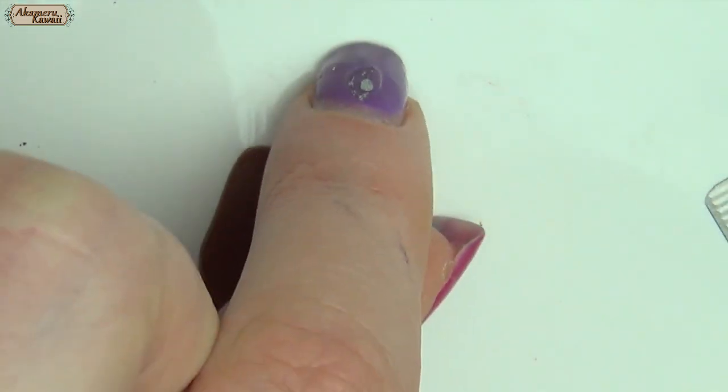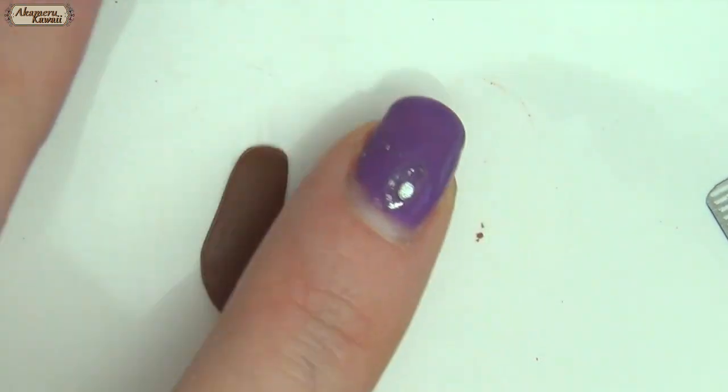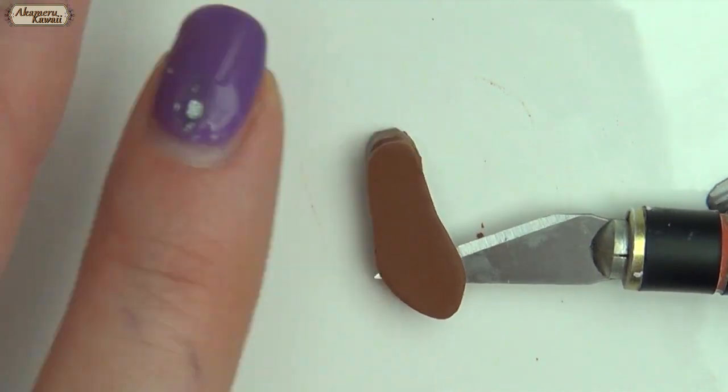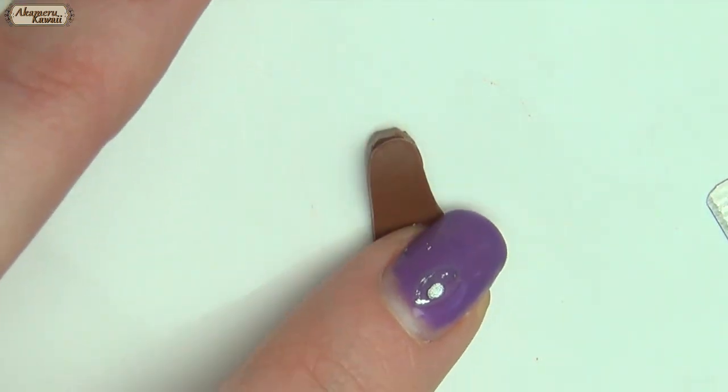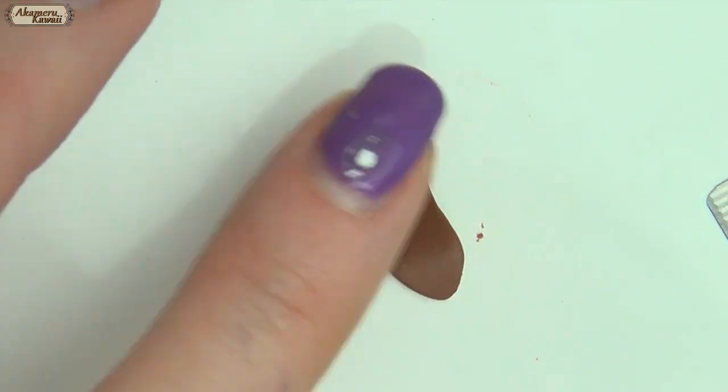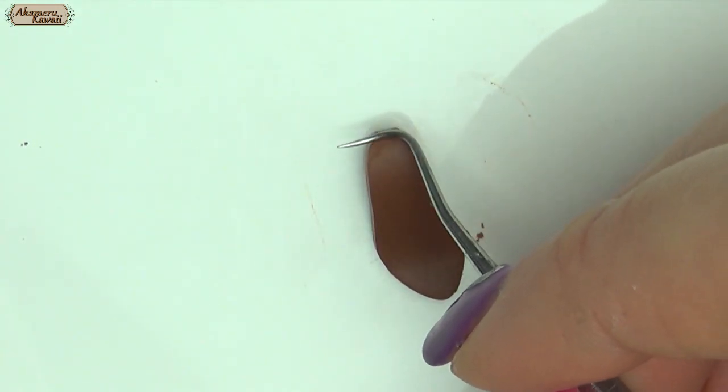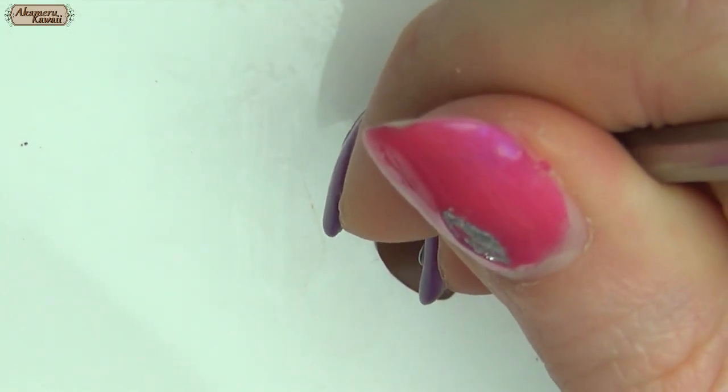Make a half moon shape for the heel and attach the piece on top. Blend the two together before baking completely.